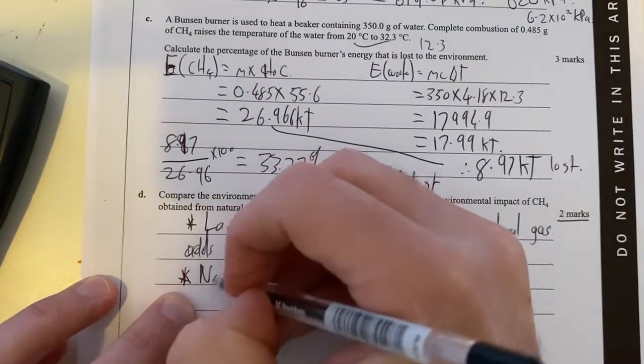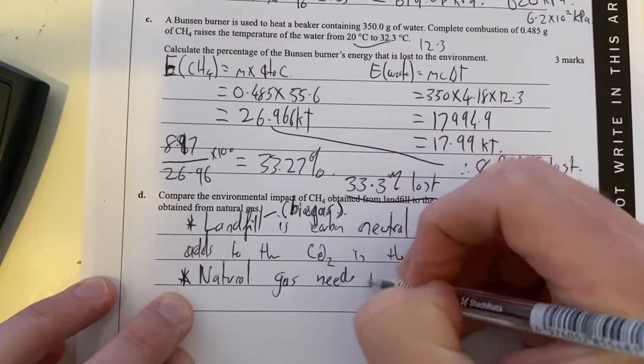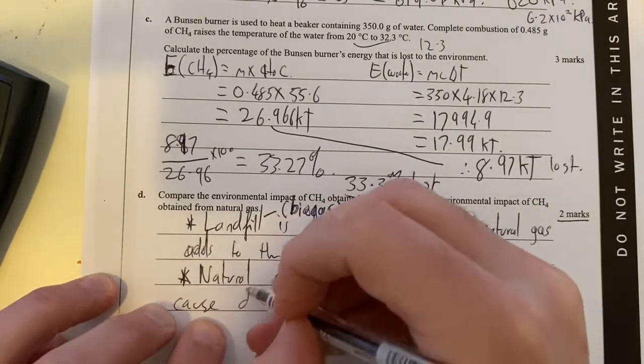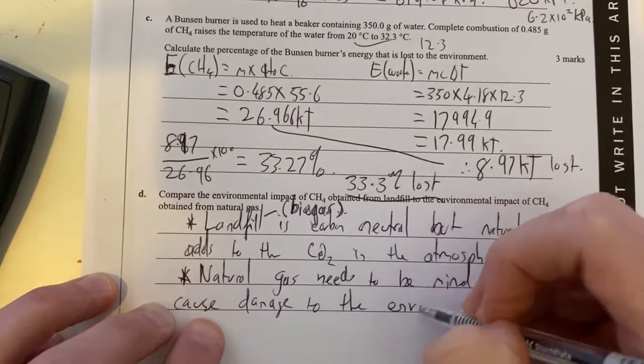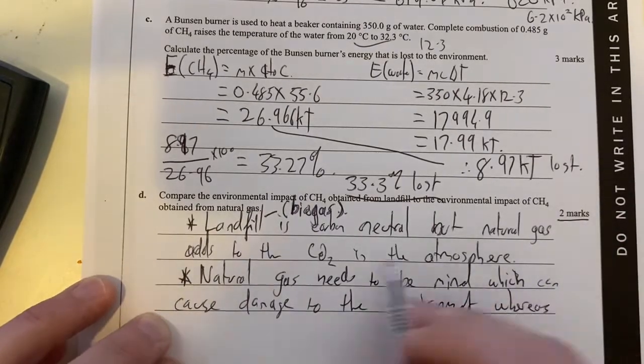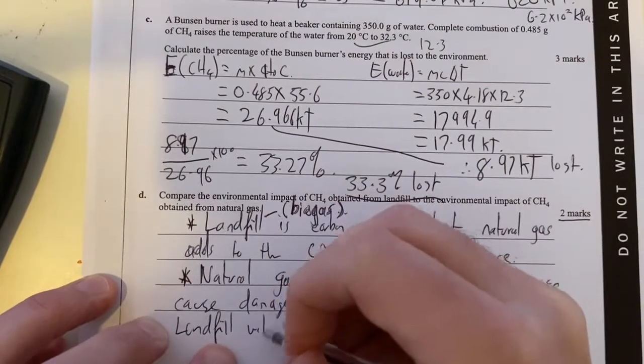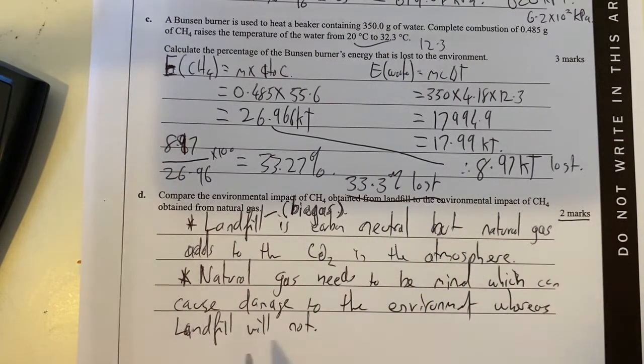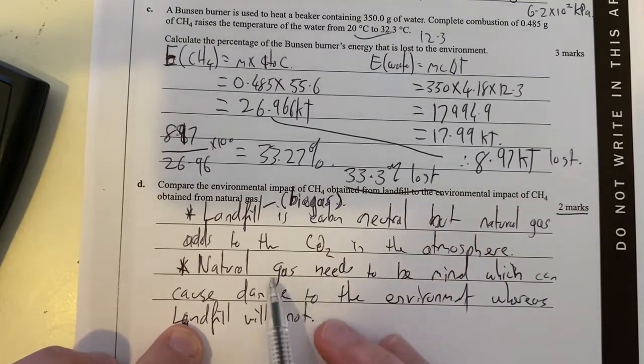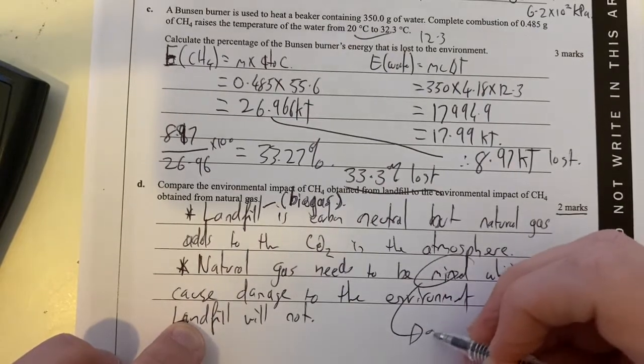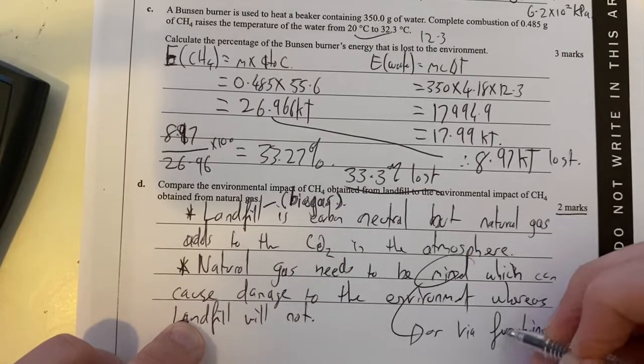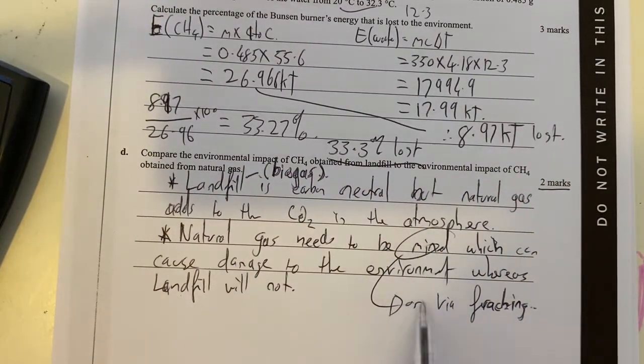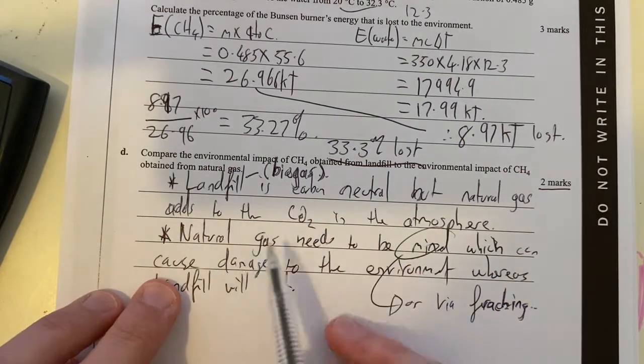Natural gas needs to be mined, which can cause damage to the environment, whereas landfill will not. Clearly, landfill can cause damage to the environment because we have leakage and stuff like that, so sometimes you have leakage into the ground and groundwater contamination through landfill, but in general, natural gas can be mined. And I'll also put there the fact that it actually can be via fracking, because it's another way of producing methane. That will cause damage to the environment because of the chemicals that are used to actually extract the natural gas in a mine or through the process of fracking. So there's another thing there.